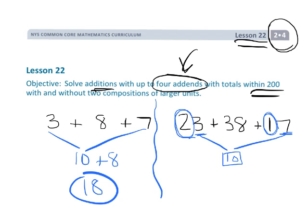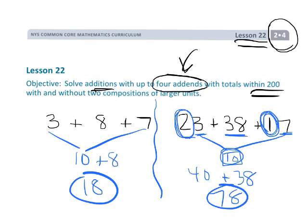So you've got 20, 30, 40. So that's 40 plus the 38. So 40 plus 38 gives us 78. So the idea would be to capitalize on number sense and the associative and the commutative property.